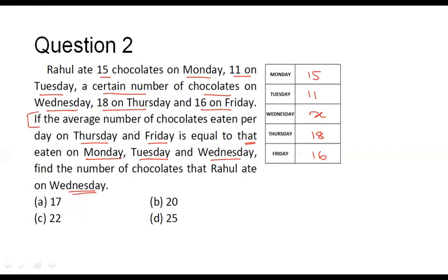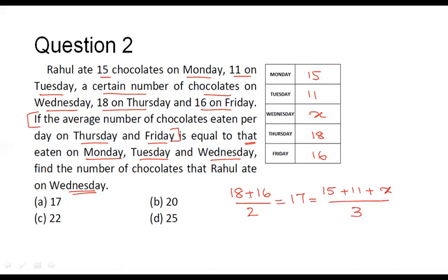Let us first find the average number of chocolates eaten per day on Thursday and Friday. That corresponds to 18 plus 16 divided by 2, which equals 17. This is equal to the average for Monday, Tuesday, and Wednesday, that is, 15 plus 11 plus X divided by 3. We divide by 2 for Thursday and Friday since only two days are considered, and by 3 for Monday, Tuesday, and Wednesday.